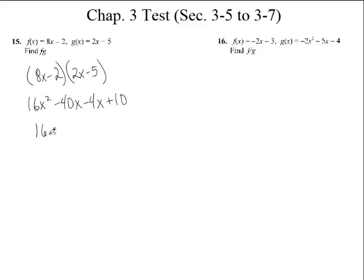Add like terms. 16x squared minus 44x plus 10. That's all you can do with this. I've had some people on the test try to solve for x. This is not a solving for x problem. This is only multiplying things together. And that's what your answer is going to look like right there.